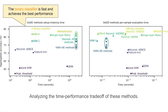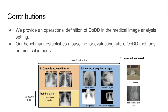We also study the time-performance trade-off of these methods and find that the binary classifier is fast and achieves the best performance. In terms of contributions for this work, we provide an operational definition of out-of-distribution detection in the medical image analysis space. Our benchmark establishes a baseline for evaluating future out-of-distribution detection methods on medical images.